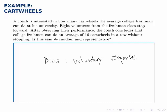The biggest source of bias here is voluntary response bias — rather than picking people to ask, the coach asks for volunteers. People that are able to do more cartwheels are more likely to step forward and volunteer for the study. Because of that, we conclude this probably isn't a very good sample. Voluntary response bias also comes into play in surveys where certain responses are more favorable than others.